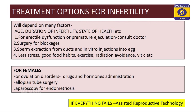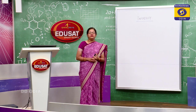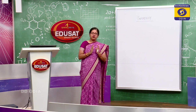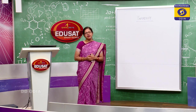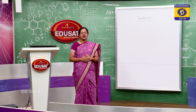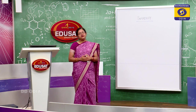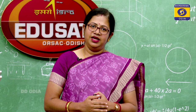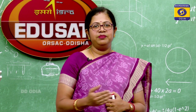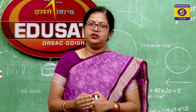For females, drugs and hormones can be given for ovulation disorders. For fallopian tube anomalies or damage, surgical correction can be done, and laparoscopic surgeries can also be practised for conditions like endometriosis. These are the treatment options for infertility. I hope you have clearly understood this topic; please go through good textbooks to increase your knowledge.